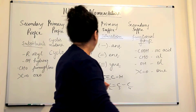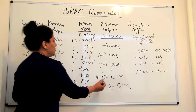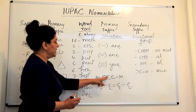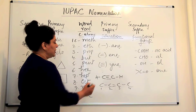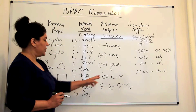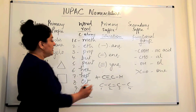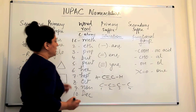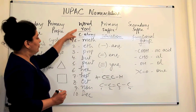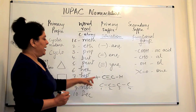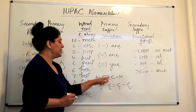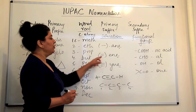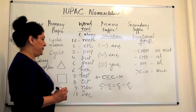If the compound has two carbon atoms and a triple bond combined with two hydrogens, there are two carbon atoms and therefore the word root would be 'eth.' Since it has a triple bond, it would be known as ethyne.